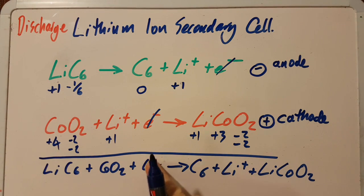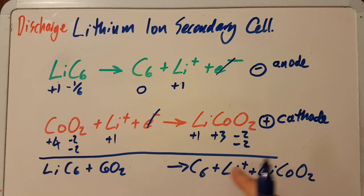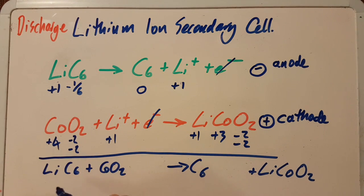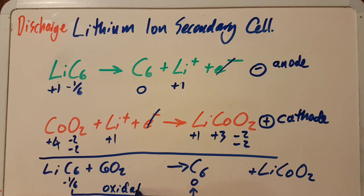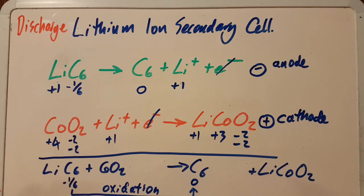This goes from minus one-sixth to zero, so the oxidation state is increasing, which means that's undergoing oxidation, and this must be the reducing agent. You can't write RA, you have to write reducing agent.